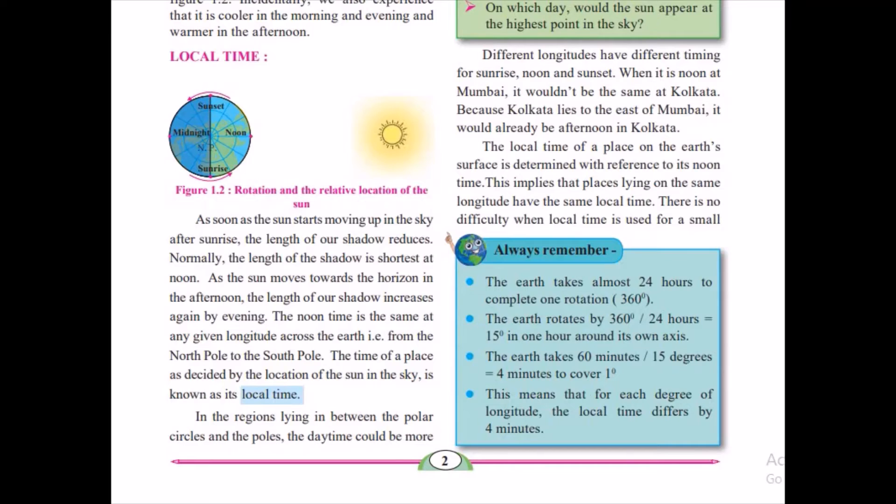The noon time is the same at the given longitude across the earth from the north pole to the south pole. The time of the place is decided by the location of the sun in the sky is known as local time. Now you may have a question, what is local time? The time of a place which are decided by the location of the sun in the sky is known as a local time.